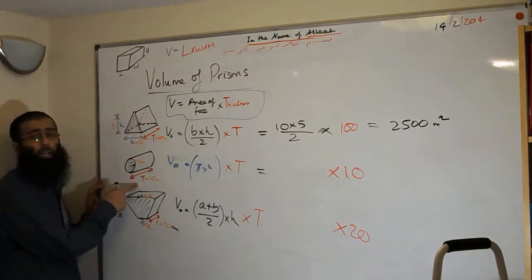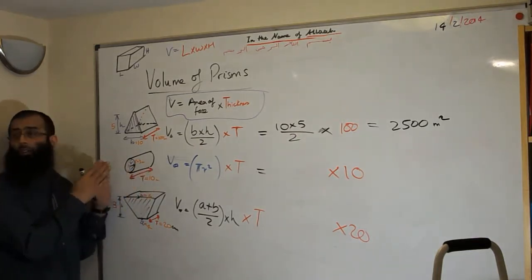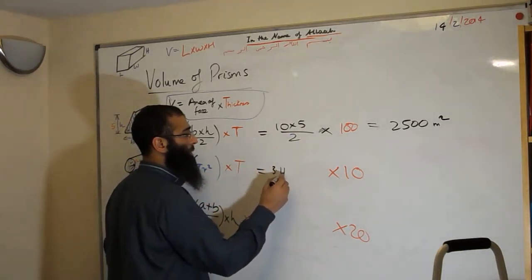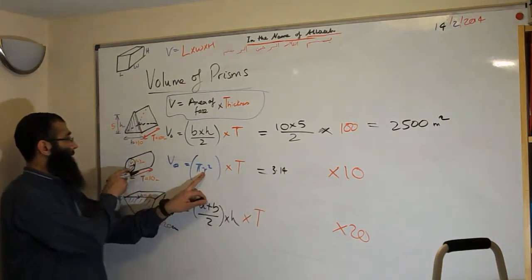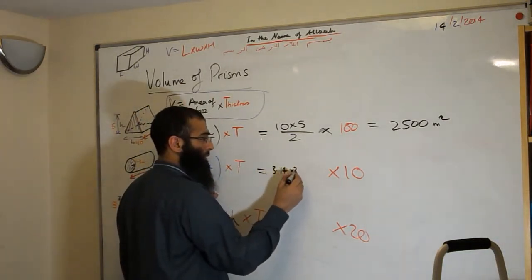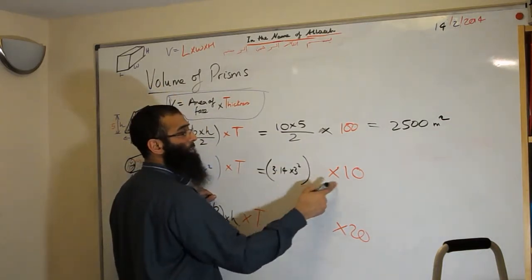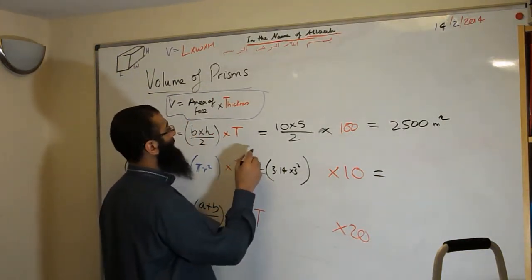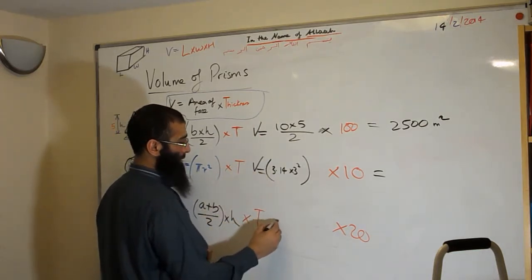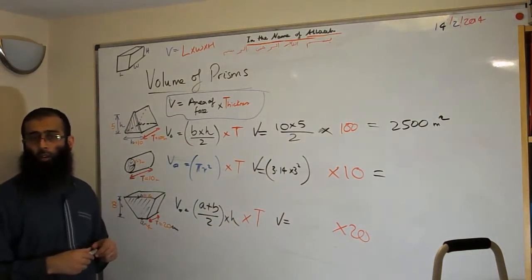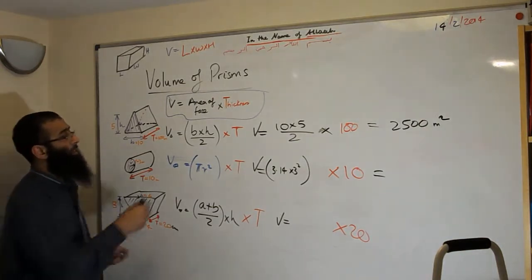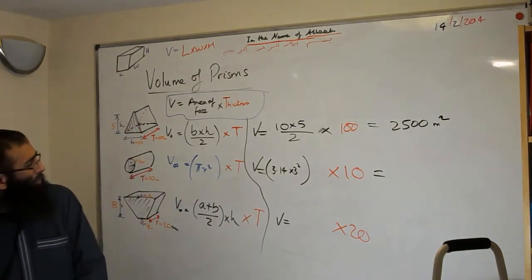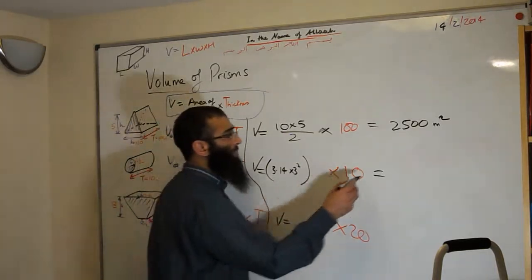Next, the volume of the cylinder — it's got a radius of 3 meters and a thickness of 10 meters. We use pi r squared times the thickness. Pi is 3.14 to two decimal places, times the radius squared (3 squared), times 10. That gives 3.14 times 9 times 10, which equals 282.6 meters cubed.